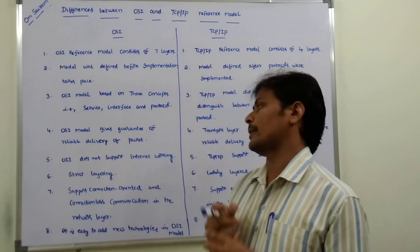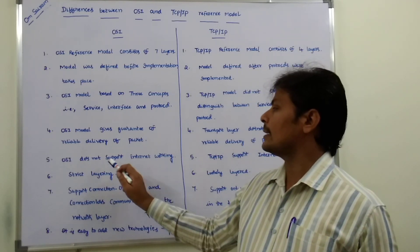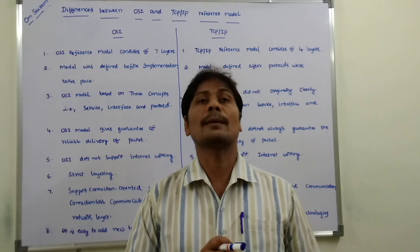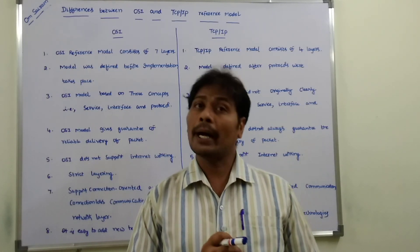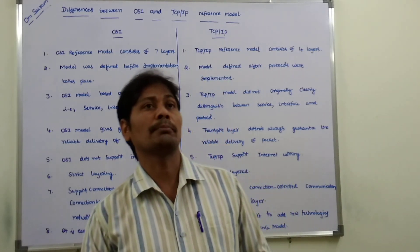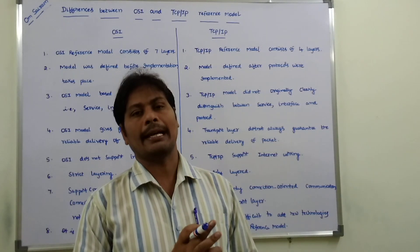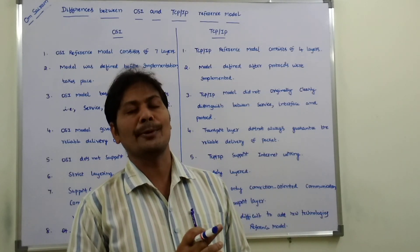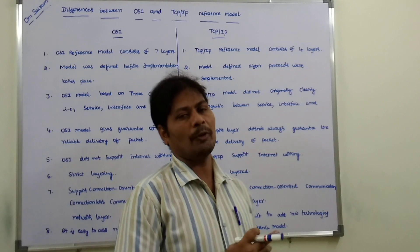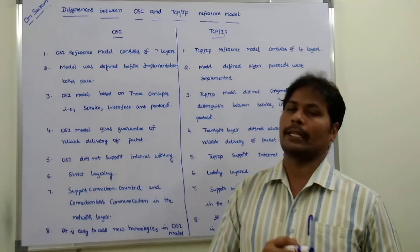The fifth difference: OSI does not support internetworking, but the TCP/IP reference model supports internetworking because it consists of an internet layer. By using this layer, we can provide internet connectivity, whereas the OSI reference model does not support internetworking.